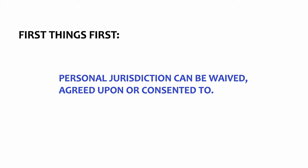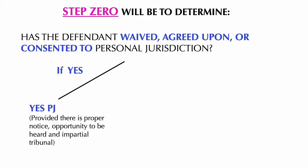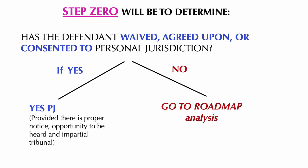First things first: personal jurisdiction can be waived, agreed upon, or consented to. Please make sure you understand the concept of waiver or consent when it comes to personal jurisdiction. This brings me to step zero — what you need to look at first. Has the defendant waived, agreed upon, or consented to personal jurisdiction? If yes, provided there is proper notice, opportunity to be heard, and an impartial tribunal, then there is personal jurisdiction. If the answer is no, then you go to the roadmap. There are several ways a defendant can waive, agree upon, or consent to personal jurisdiction. Before you look at the roadmap, make sure you look at step zero. If the defendant has not waived, agreed upon, or consented, then go to the roadmap.